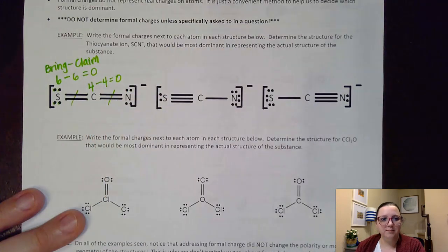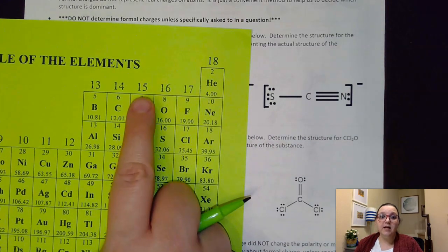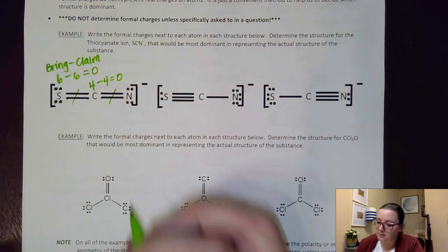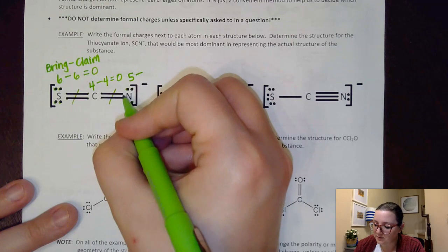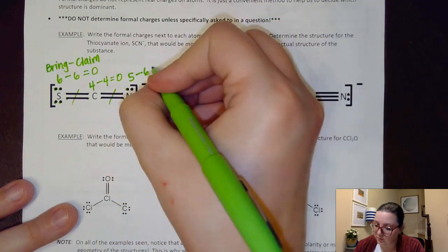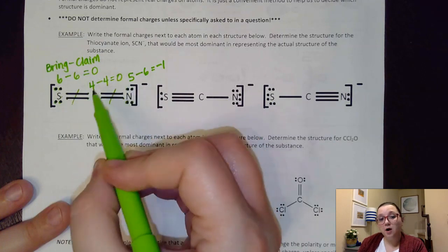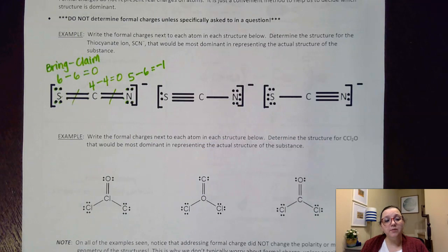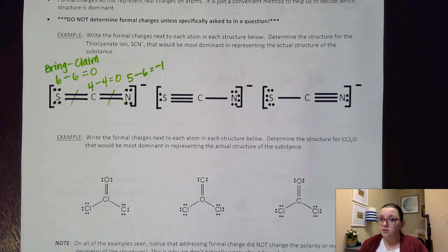Now for nitrogen: it's in group 15, so it brings five valence electrons. It claims four unshared electrons plus half of the bond — five, six. Five minus six gives a formal charge of negative one. So in this first structure: sulfur is zero, carbon is zero, nitrogen is negative one. Notice these tally up to the overall negative one charge on the thiocyanate ion — all formal charges should tally to the overall charge.